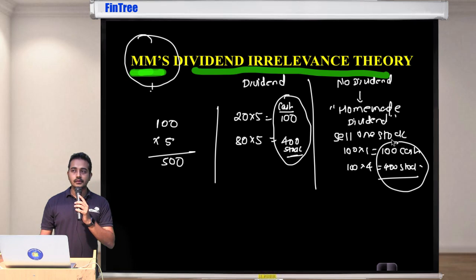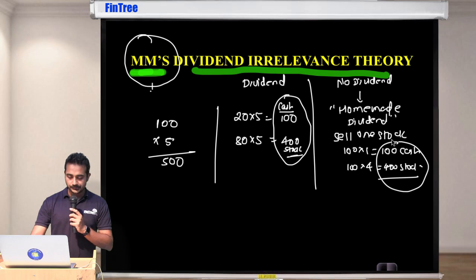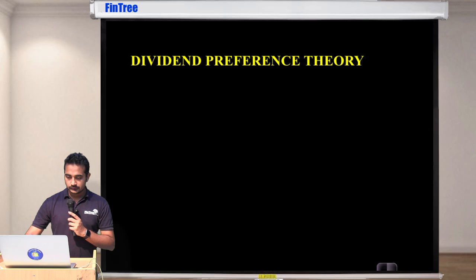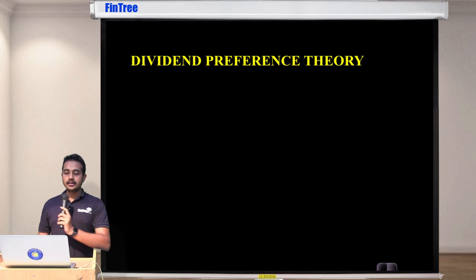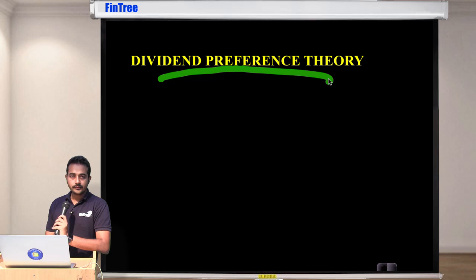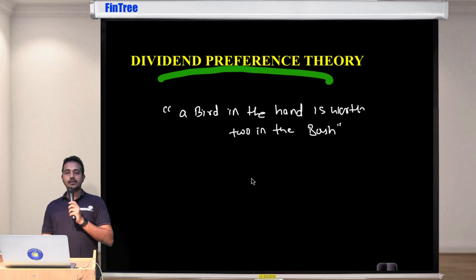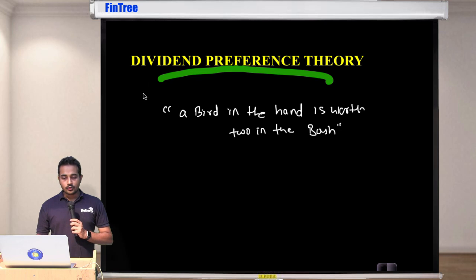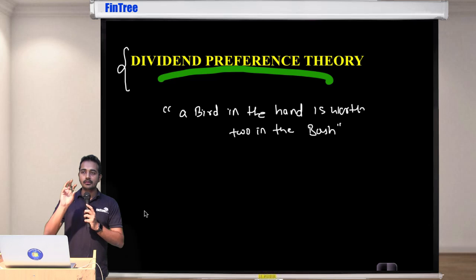So I think you should write this. Assuming you've written this may I? Next one is a dividend preference theory. So here an easiest way to remember is you would say a bird in the hand is worth two in the bush.